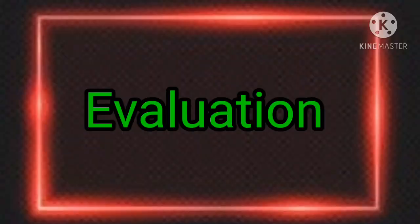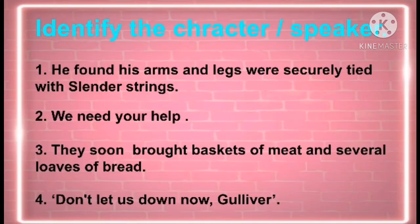Now let's see the evaluation. Children, it's time for questions. Once again, you can go through the story and answer. Identify the character or speaker. First: 'He found his arms and legs were securely tied with slender strings.' Second: 'We need your help.' Third: 'They soon brought baskets of meat and several loaves of bread.' Fourth: 'Don't let us down now, Gulliver.'